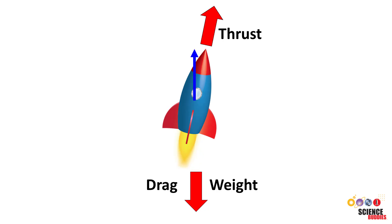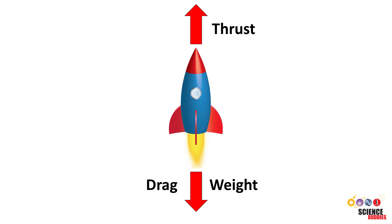If the rocket tips so it isn't flying straight, then the fins will generate a sideways lift force. This helps stabilize the rocket and point it back in the right direction. We have another video about the aerodynamic stability of model rockets if you want to check that out.